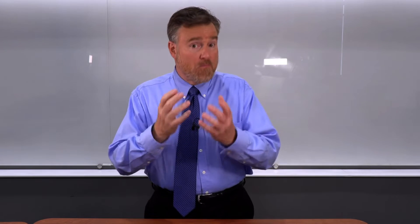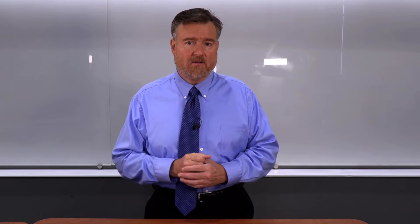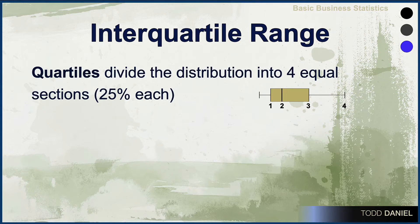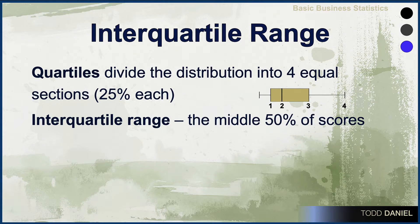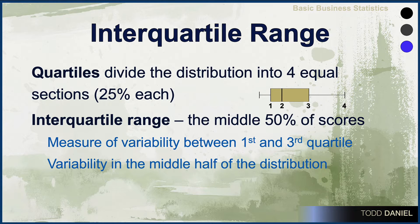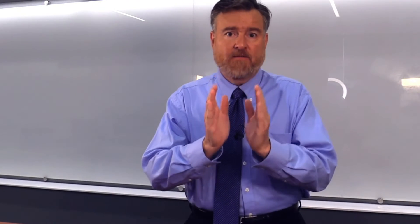Therefore, a better, more stable measure of variability using the range concept is called the interquartile range, measuring the variability within the middle half of the scores. Splitting our data into quartiles divides the distribution into four equal sections of 25% each. The interquartile range is the variability in the middle 50% of the scores, or the measure of variability between the first and the third quartile. This is the middle half of our distribution and, as such, would not be susceptible to outliers — no matter what outliers are added, it won't affect the range in that middle 50%.